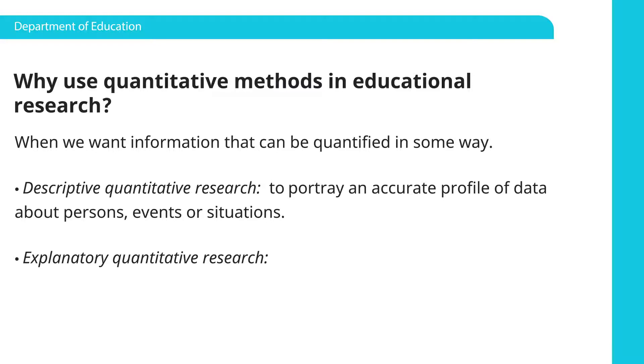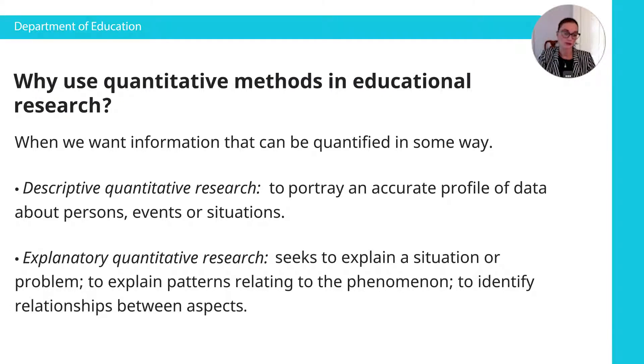Now, if you're looking at explanatory quantitative research or doing explanatory data collection, this seeks to explain a situation or a problem, to explain patterns relating to the phenomenon, to identify relationships between aspects. So this is different to just describing your data. You're actually now going to identify relationships between different aspects of your data. For example, if you want to look at the difference in learning outcomes in science classrooms according to gender, you could look at this and run a statistical test to see whether there's a relationship there.